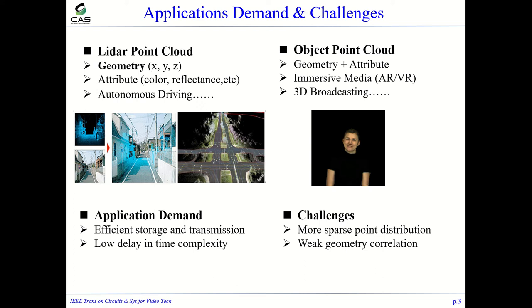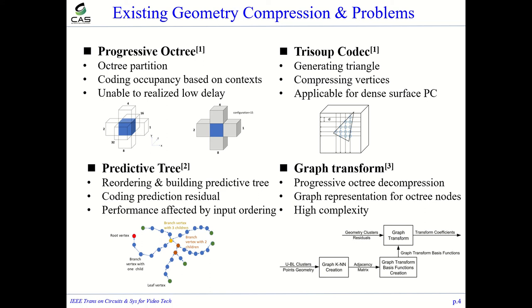LiDAR point cloud compression not only requires efficient storage and transmission, but also needs low delay in time complexity. However, LiDAR point clouds are sparse due to many disconnected regions, and the correlation between points becomes weak, leading to less efficient geometry compression than object point clouds. There are many geometry compression methods in the literature and industry.